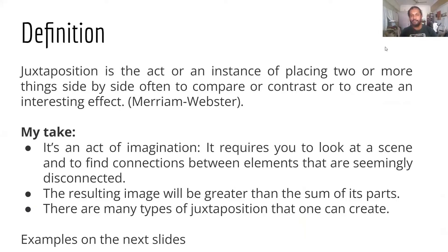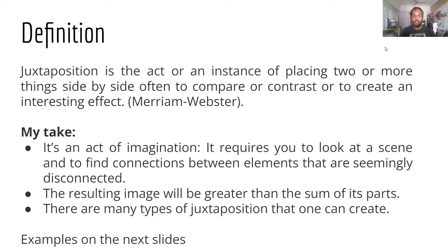We'll start with the English dictionary definition from Merriam-Webster. Juxtaposition is the act or an instance of placing two or more things side by side, often to compare, contrast, or to create an interesting effect. My take when it comes to juxtaposition in the realm of photography, especially street photography, is that it's an act of imagination. It requires you to look at the scene in front of you and to find connections between elements that feel completely disconnected at first. The resulting image will be greater than the sum of its parts.